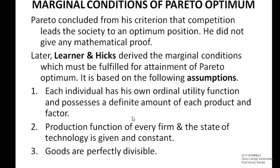Hi friends, now we can discuss the marginal conditions of Pareto optimality. Pareto in his criterion states that any change that makes any individual better off without making others worse off is an improvement in social welfare. The society is said to have reached the optimum level, i.e., Pareto optimality or Pareto efficiency, when it is impossible to make anyone better off without making any others worse off.